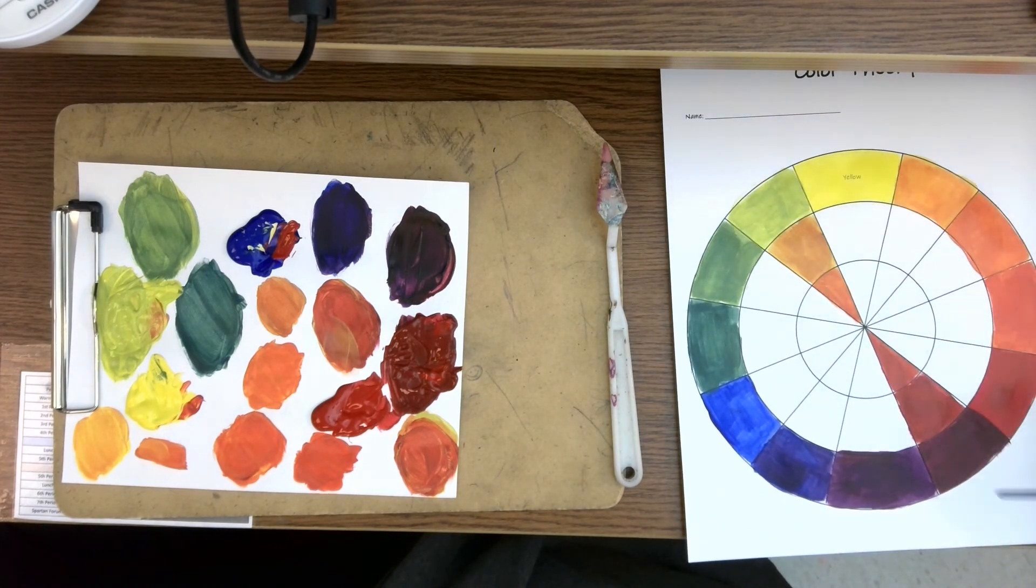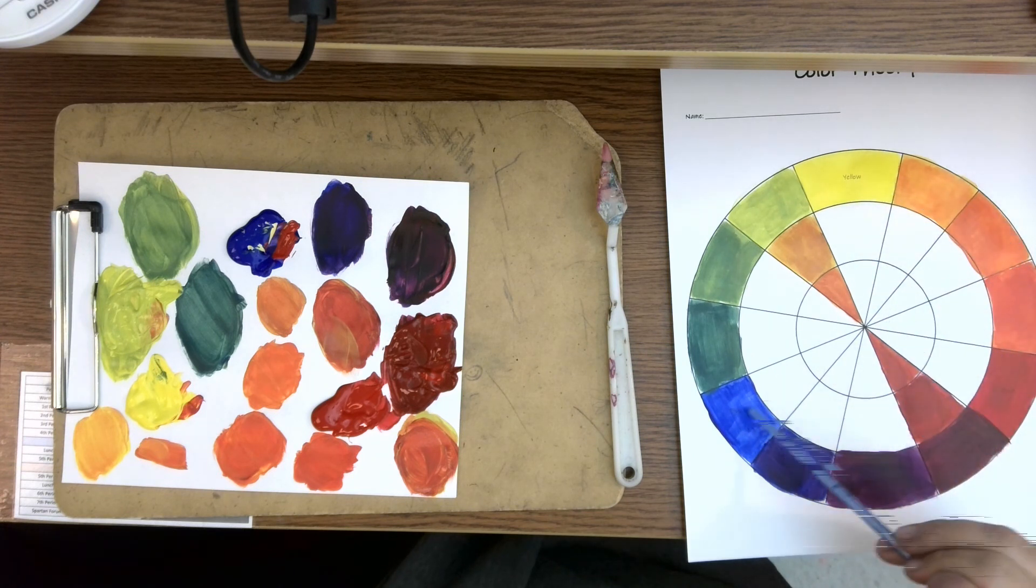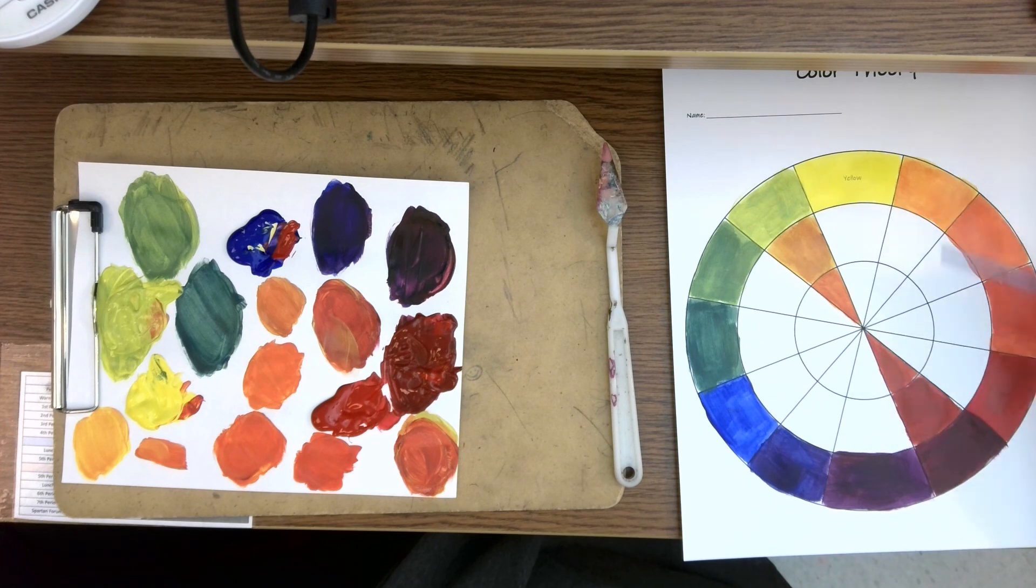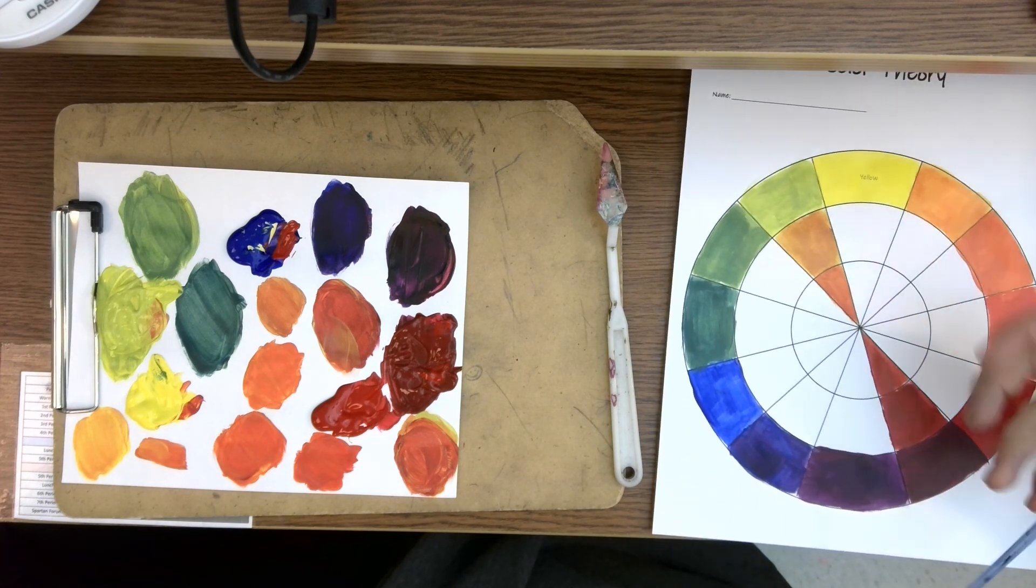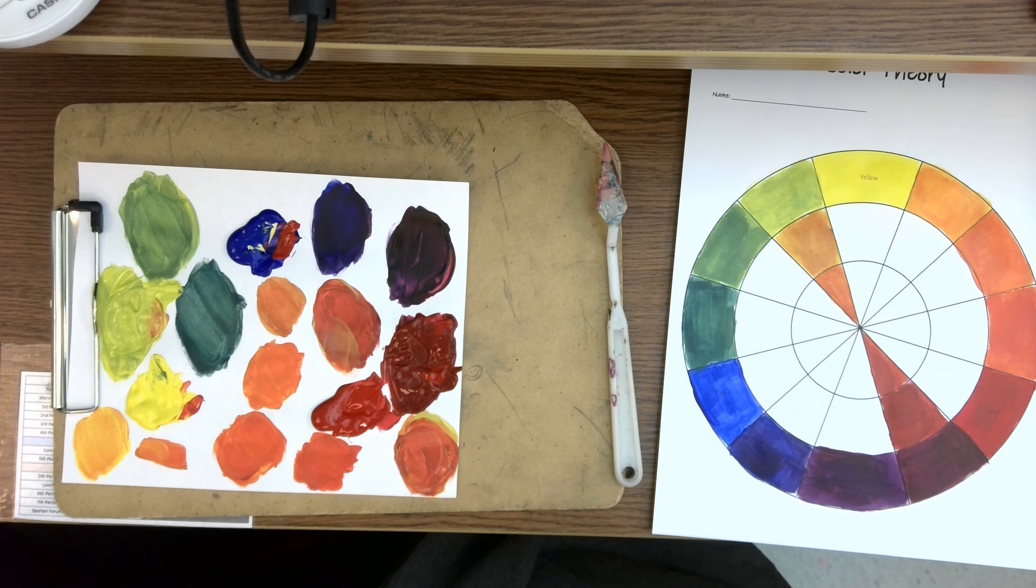Otherwise you won't get the full effect of what your color wheel looks like. Once it's all finished, you will kind of see this unity and progression where things gradually get lighter or they gradually get darker or they gradually get cooler or they gradually get warmer. They'll all gradually get kind of more brown towards the center. So we want to see that full effect of the color wheel when it's finished.